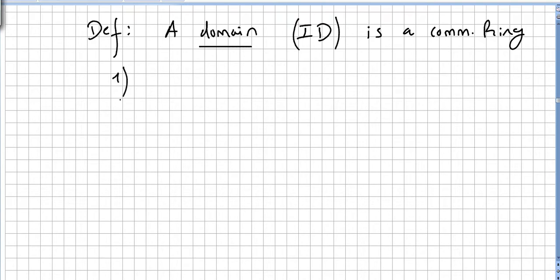The first axiom will be the identity, the multiplicative identity, is different from the addition identity.